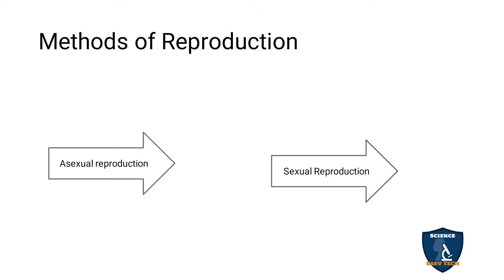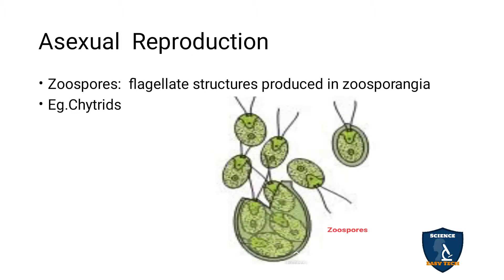There are two methods of reproduction: asexual reproduction and sexual reproduction. First we will see asexual reproduction. In fungi, asexual reproduction takes place by spores.